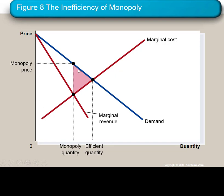The monopoly outcome is less than the competitive outcome. If we had a standard competitive equilibrium, all of the area between the demand curve and the marginal cost curve — which is the supply curve in competition — would be consumer and producer surplus. But we lose some of that consumer and producer surplus, what we call deadweight loss, and that's the inefficiency of monopoly.